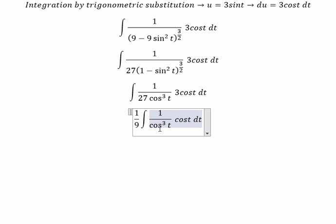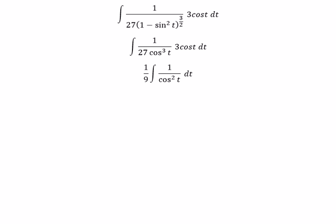This simplifies to 1 over cos² t, and now we can get the final answer. The integral of 1 over cos² t gives us tan t, and we add C as the constant.